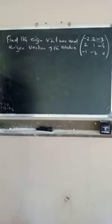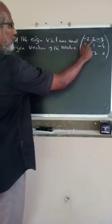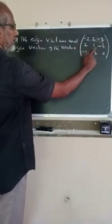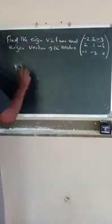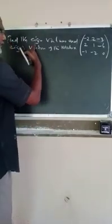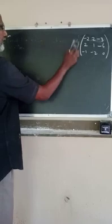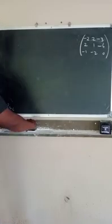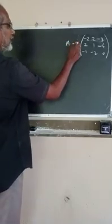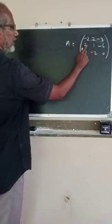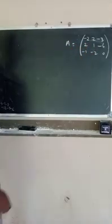Find the eigenvalues and eigenvectors of the matrix A equal to minus 2, 2, minus 3, 2, 1, minus 6, minus 1, minus 2, 0.